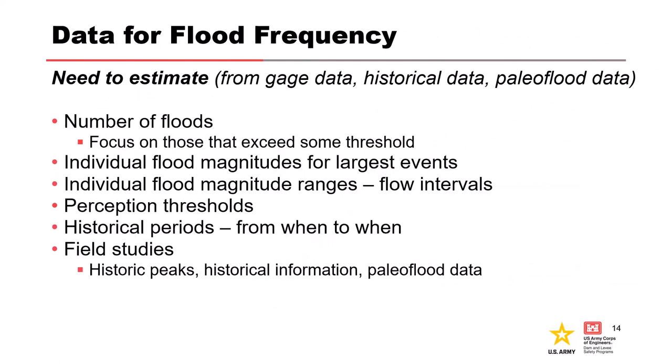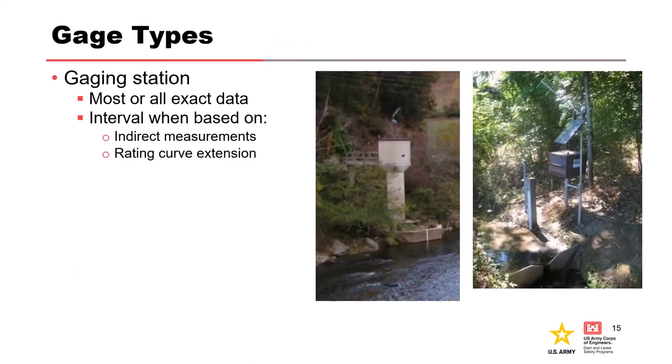In summary, key things to estimate include: how many extreme floods occurred at this site, what are their approximate magnitudes described with an interval including upper and lower bounds, and what are the perception thresholds estimated from historical events or evidence. When looking at systematic or historical data, it's good to know what type of gauge was used and how historical floods were estimated, since a gauging station may have direct measurements while others rely on indirect measurements or rating curve extensions — knowing this adds context to the quality and uncertainty around the flow.